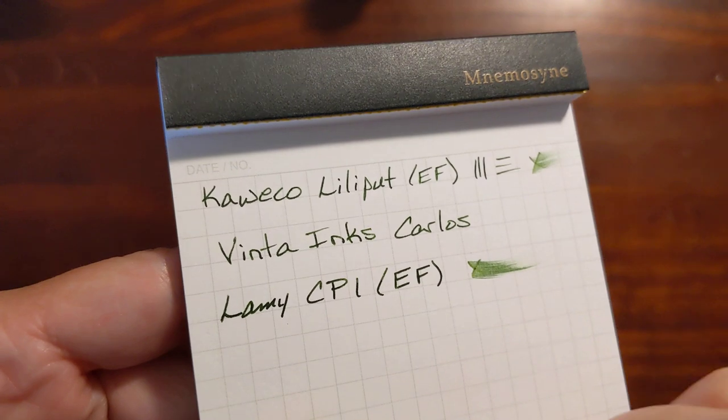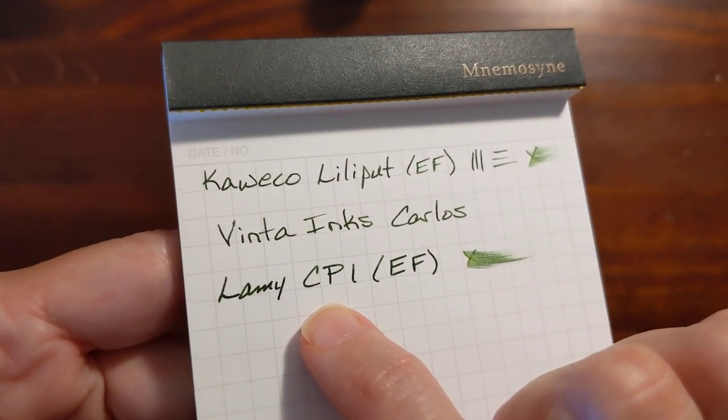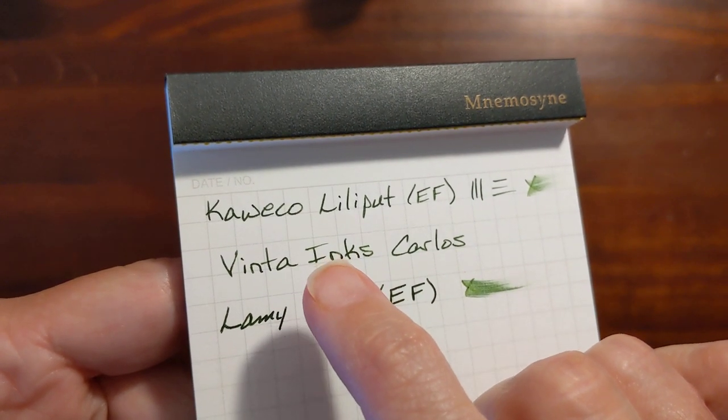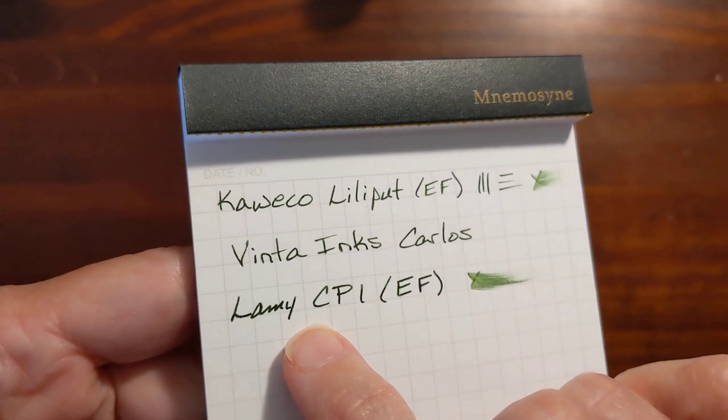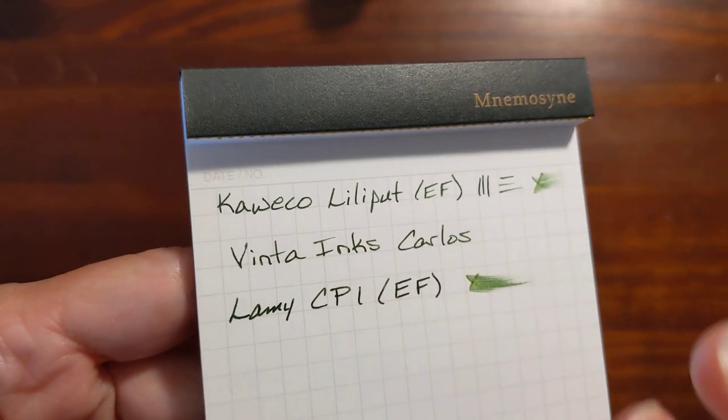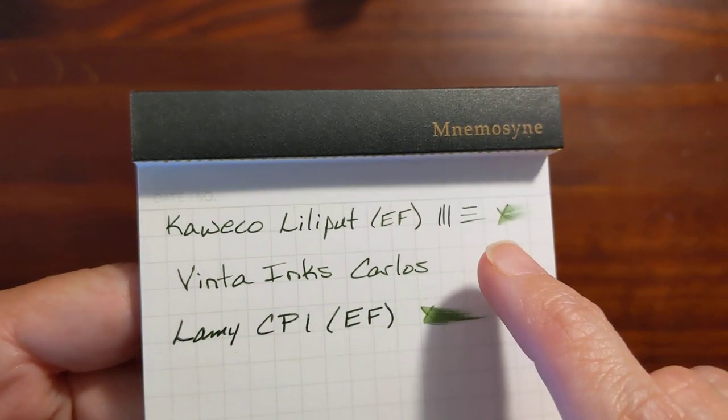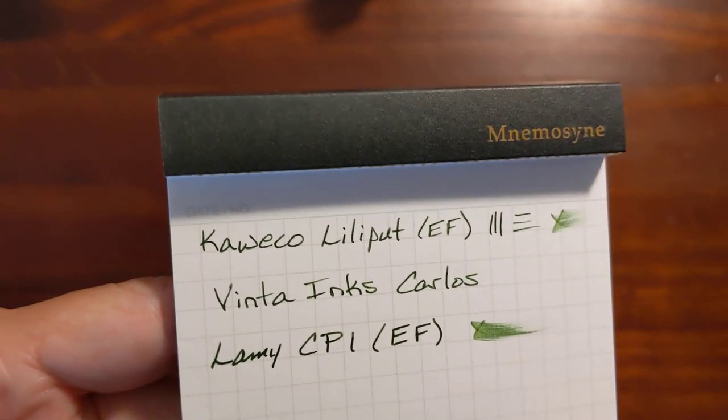With the Lamy it looks quite a bit darker. It looks almost black. With the Liliput you can tell that it's a green ink. It just looks like a dark green ink. I would say when I'm writing with the Lamy it looks like the outside of an avocado and with the Liliput it looks like maybe a little darker than the inside of an avocado.